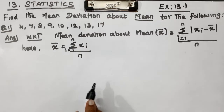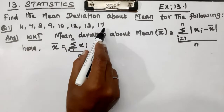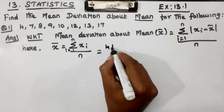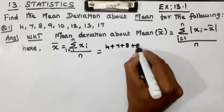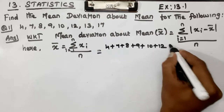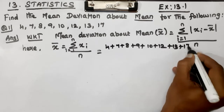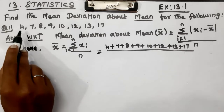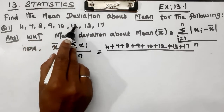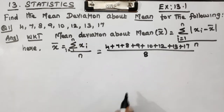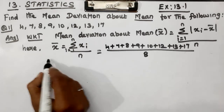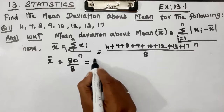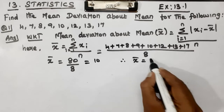We take the summation of all x values: 4 plus 7 plus 8 plus 9 plus 10 plus 12 plus 13 plus 17, divided by the number of observations, which is 8. So x_bar equals 80 divided by 8, therefore x_bar equals 10.